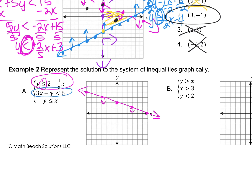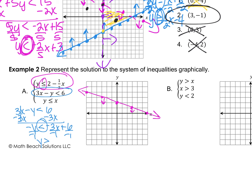The second equation is not in slope-intercept form, so I isolate y by subtracting 3x to get -y < -3x + 6. Dividing everything by -1 — remember, you must flip the inequality sign when dividing by a negative — gives y > 3x - 6.